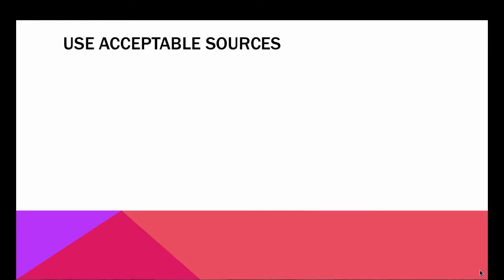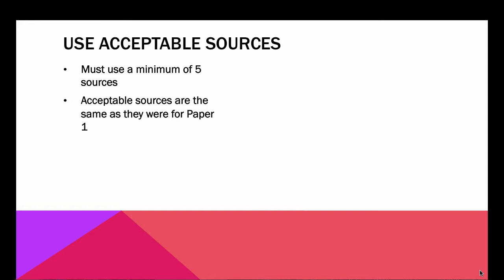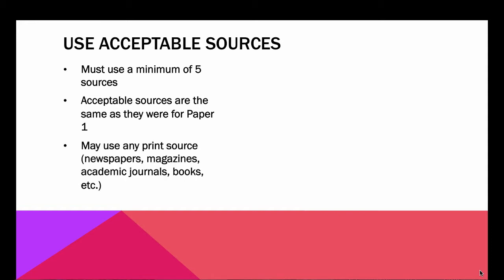You have to use acceptable sources, and again it's the same list as it was for the first paper. You need a minimum of five sources. You can use any print source — any newspaper, magazine, academic journal, book, anything like that — because it's been through the editing process.